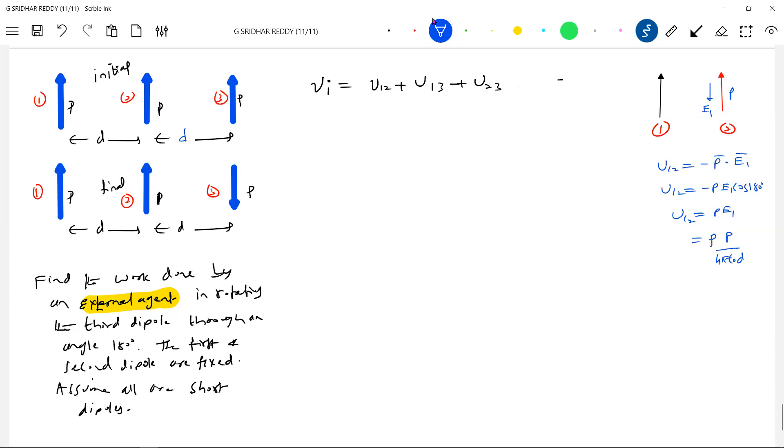P by 4π ε₀ on the bisector, d³. So it should become finally equal to P² by 4π ε₀ d³. And the interaction potential between one and three...